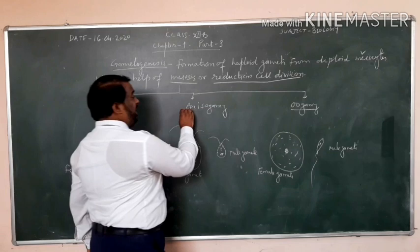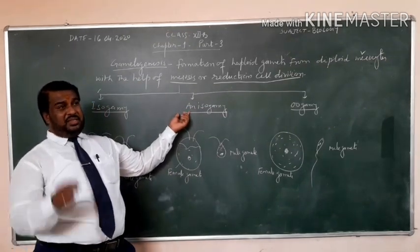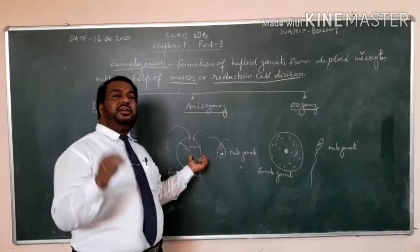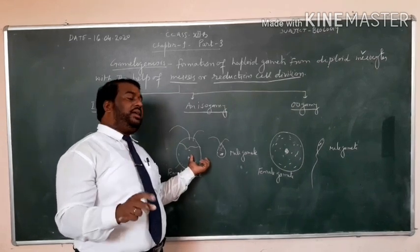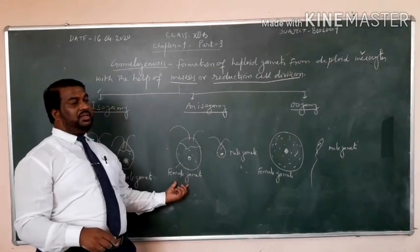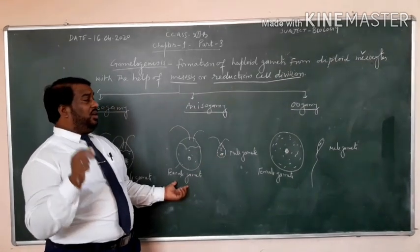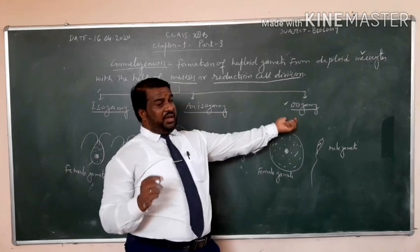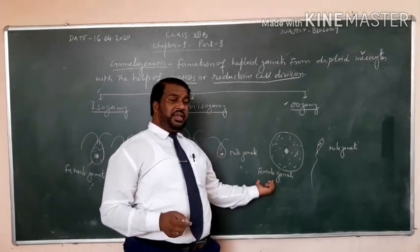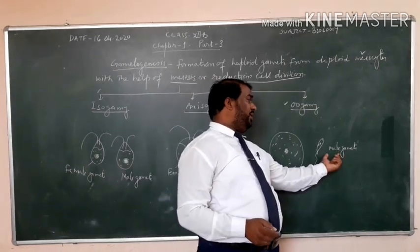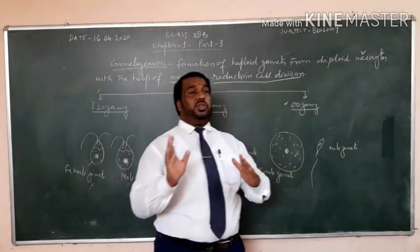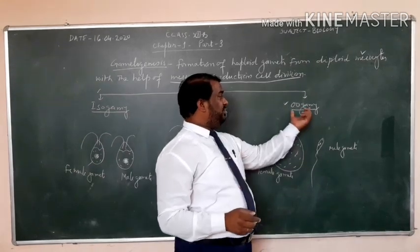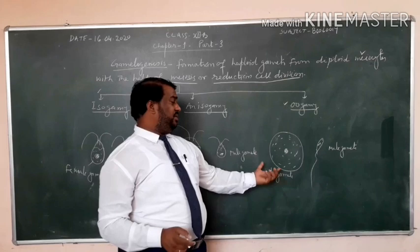Now in anisogamy, anisogamy means both the gametes have a different shape and size but have mobility or motile. Means male gametes and female gametes motile in nature. Now third one about oogamy. Oogamy having non-motile female gametes and motile male gametes. Both structures are different in nature. And this kind of phenomena occur in humans.